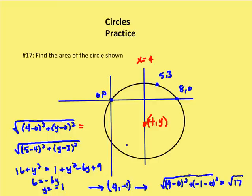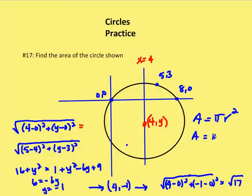Now the center is (4, negative 1). To find the radius, I find the distance from (4, negative 1) to (0, 0): the square root of 4 minus 0 squared plus negative 1 minus 0 squared equals the square root of 17. The area of a circle is pi times r squared, so the area equals pi times the square root of 17 squared, which gives an area of 17 pi.